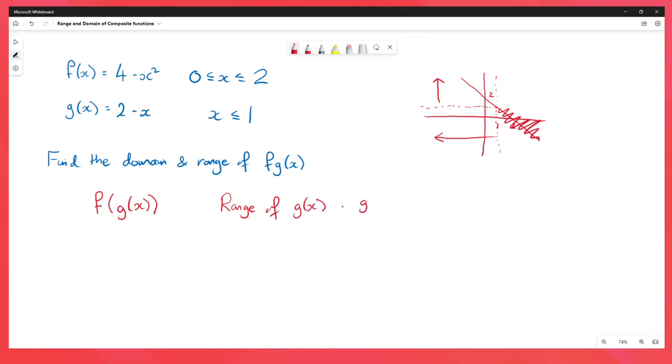So we know the range of g needs to be that g of x is greater than or equal to whatever this number is here. To calculate it we put 1 into our function g, 2 minus 1 is 1. So this is our starting point.